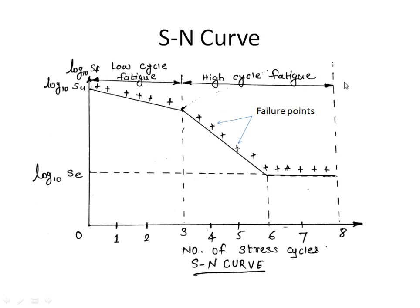The SN curve is used for predicting the life of a component subjected to completely reversible stresses. The life of a component that can sustain up to 10 to the power 3 number of stress cycles is known as finite life, meaning the component will have a certain finite life. When the component sustains from 10 to the power 3 up to 10 to the power 8 number of stress cycles, it is assumed that the component has infinite life.